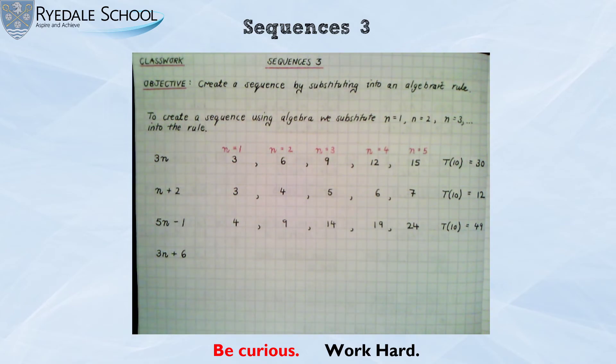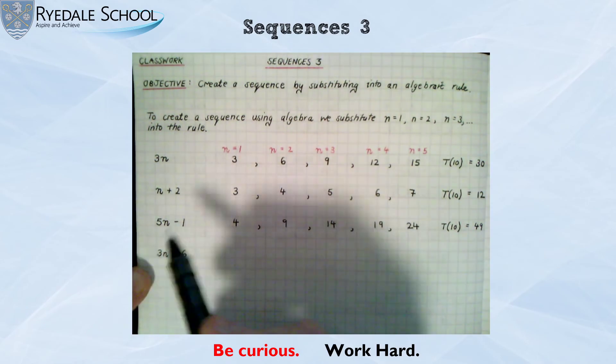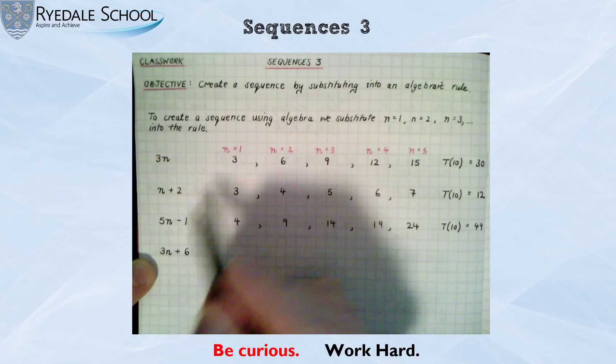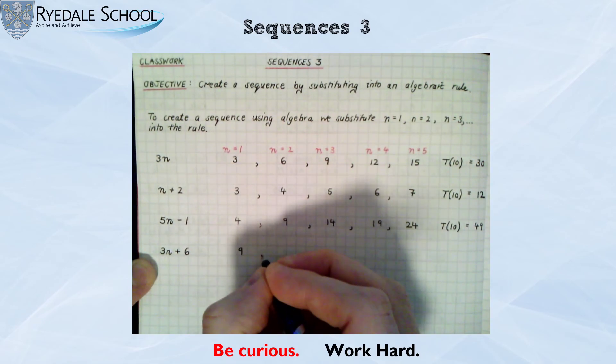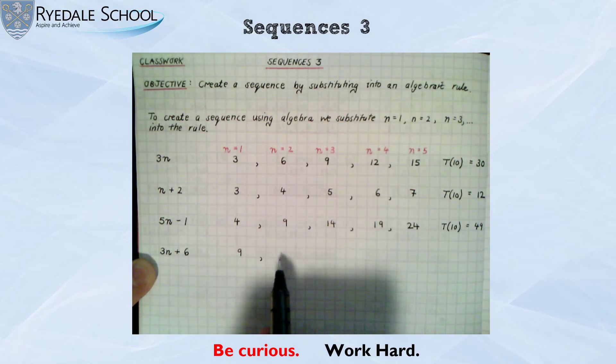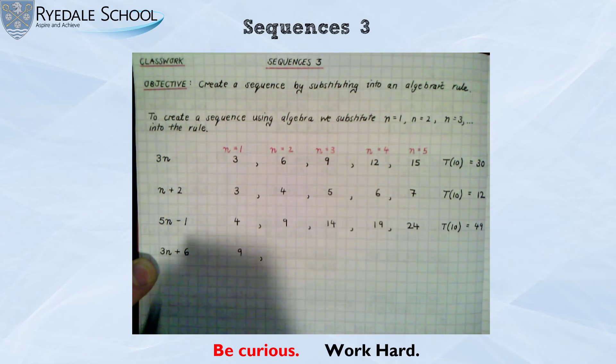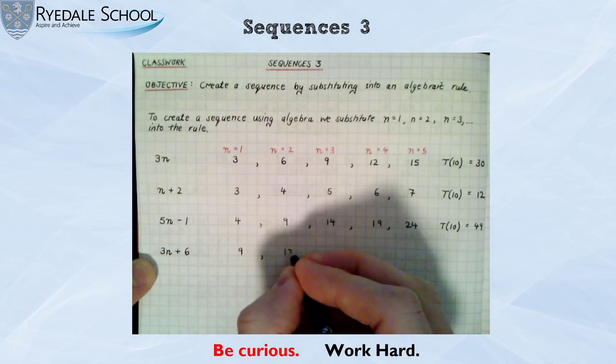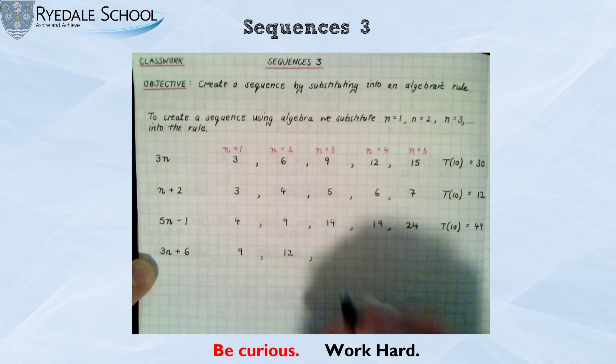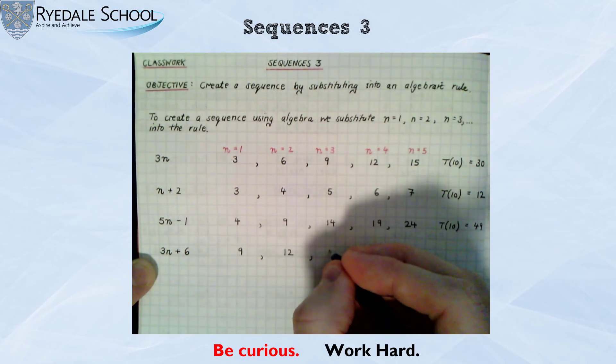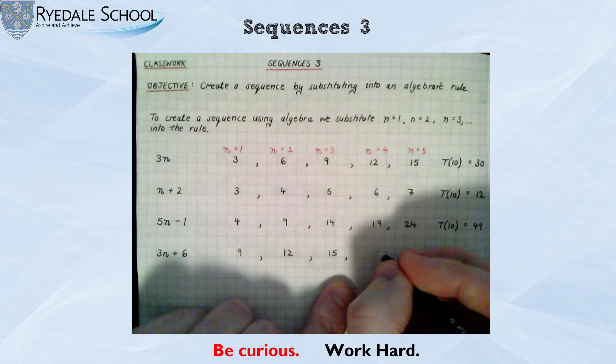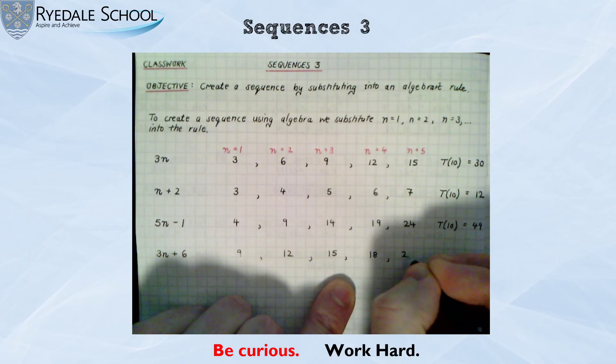You should have had time to work out the sequence. I'm now going to quickly go through it. But you should have done 3 times 1 is 3, add 6 is 9. For the second term, 3 times 2 is 6, add 6 is 12. Third term, 3 times 3 is 9, add 6 is 15. And this sequence is going up in 3s.